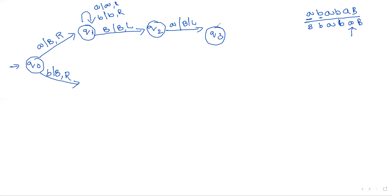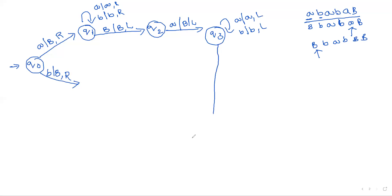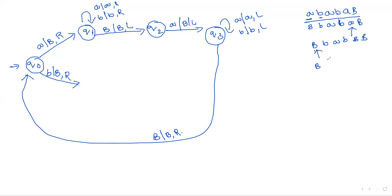At state q3, while moving: 'b' is replaced with 'b', 'a' is replaced with 'a', 'b' is replaced with 'b' — until a blank occurs, whatever symbol we encounter we replace with the same symbol. Whenever a blank occurs, the blank is replaced with blank and then move to the right direction — back to state q0.